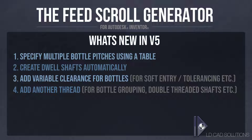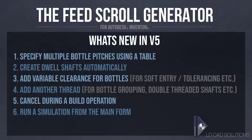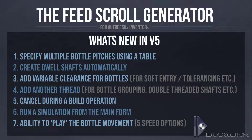You can now add another thread to an existing shaft, so this makes bottle grouping and double threaded shafts very simple. We can now cancel in the middle of a build operation and return back to the builder to make some changes before building again. We now start a simulation from the main form for much easier access. And finally, we now have play buttons in a simulation. Let's take a look at these in action.